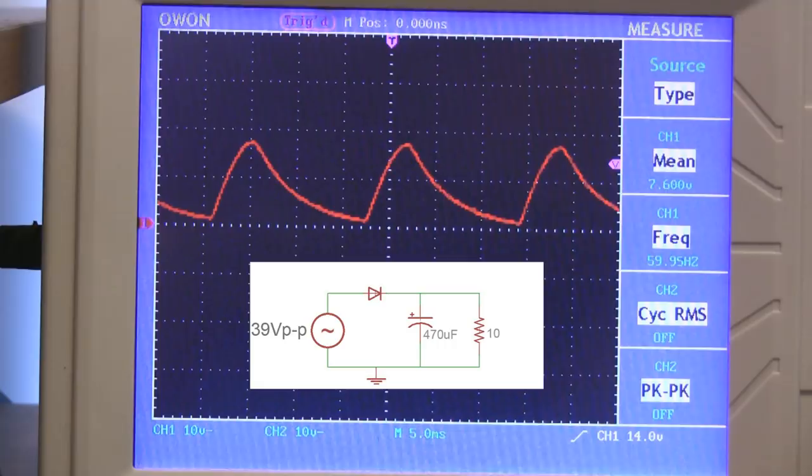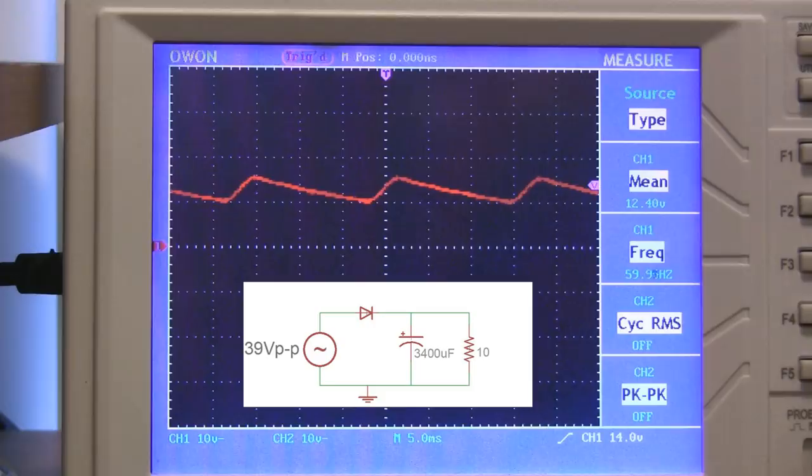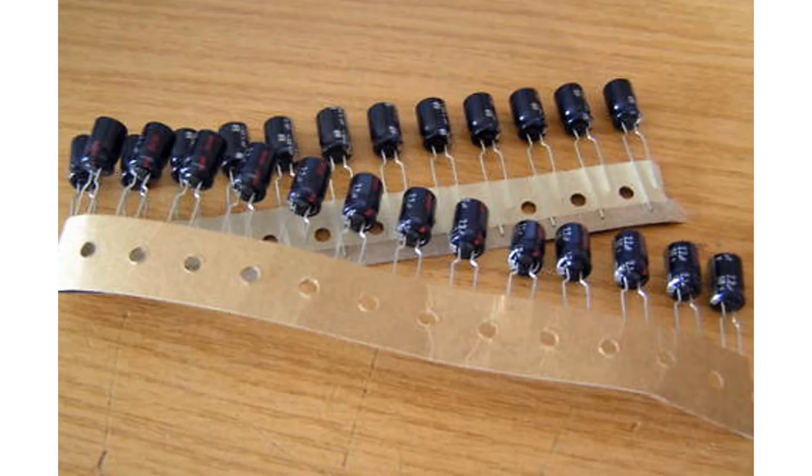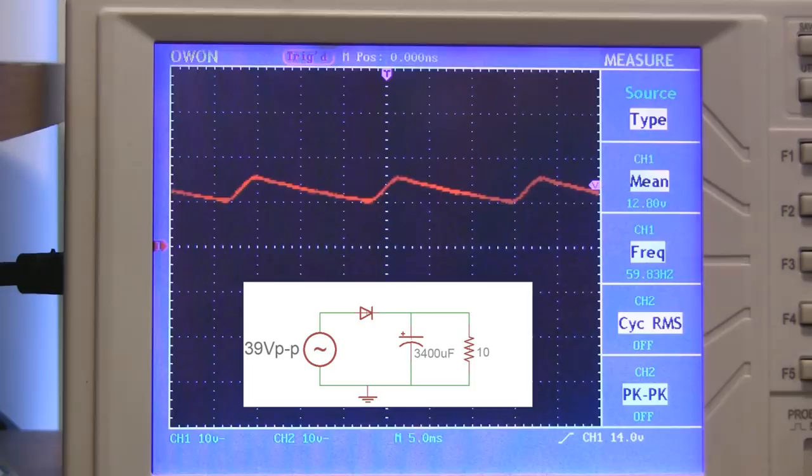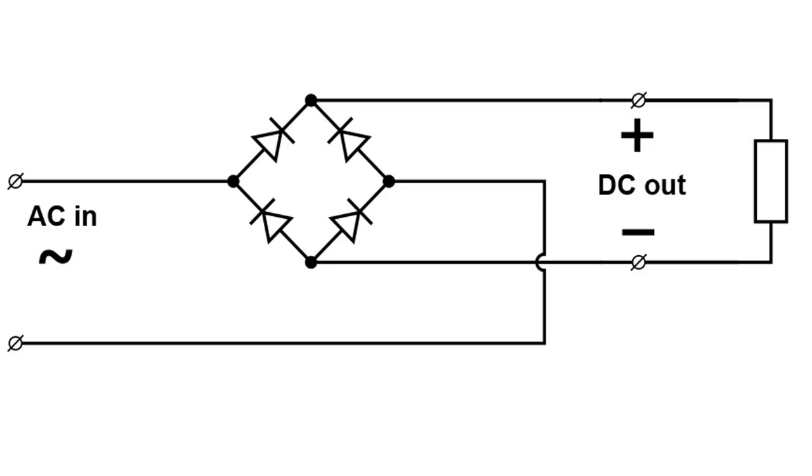One thing we can do now is take the brute force approach and add even more capacitance. So let's see how the circuit performs with 3400 microfarads. Well, it's better. Now we're getting an average voltage of around 12.5 volts, so we're drawing an average of about 1.25 amps, but we've still got 5 volts of AC ripple, which is a lot. Now, we can keep adding capacitance all day long to reduce the amount of sagging between cycles, but for loads of several amps, it just becomes really impractical and expensive.